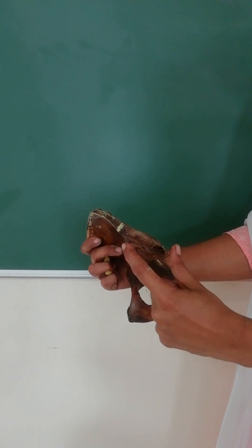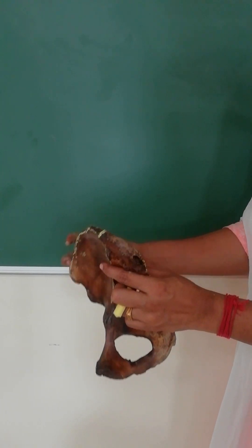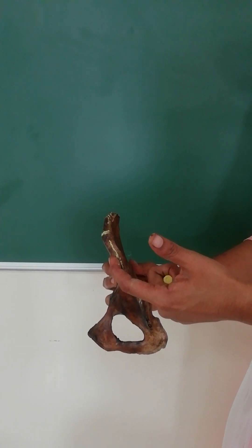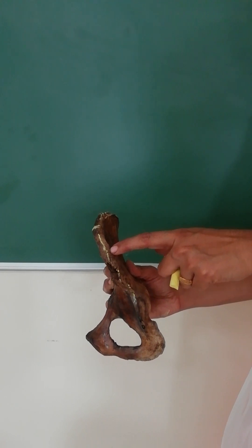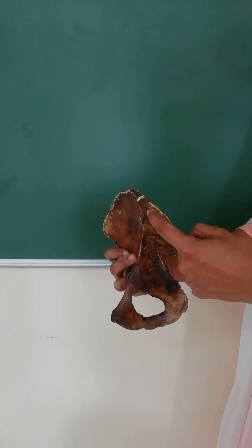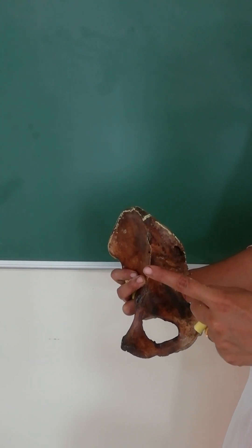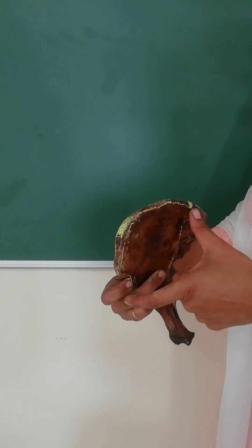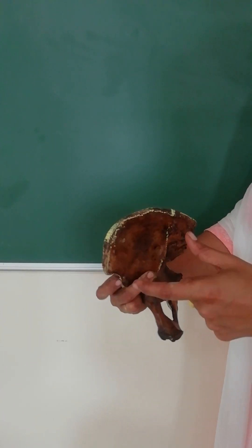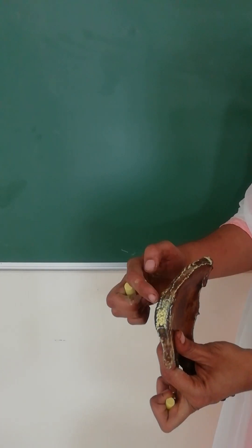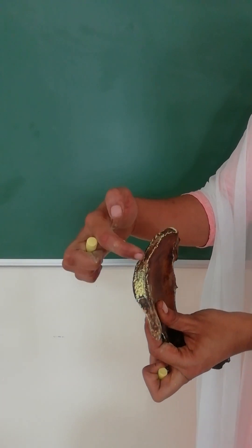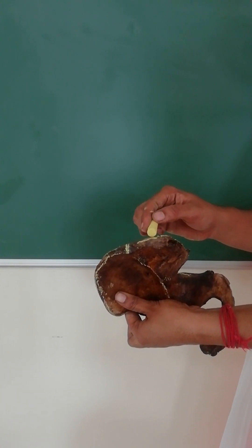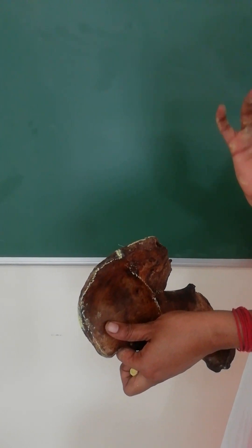In the dorsal one-third of the iliac crest, a ridge divides it into outer and inner parts. The outer part gives attachment to gluteus maximus, and the inner part gives attachment to erector spinae. The iliac crest has a sinuous shape, divided into ventral two-thirds with the iliac tubercle, and dorsal one-third with gluteus maximus and erector spinae attachments.